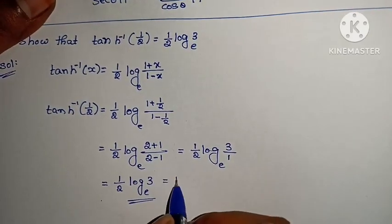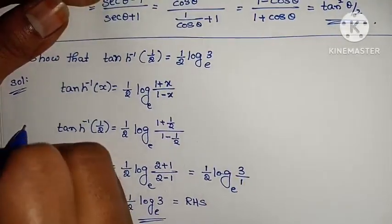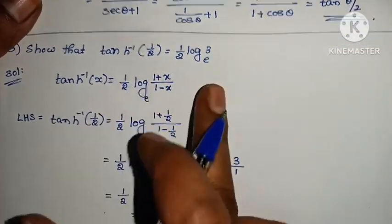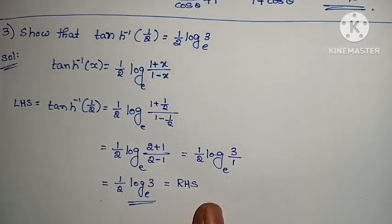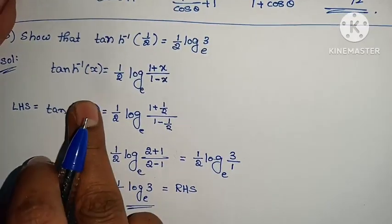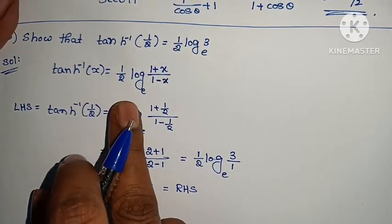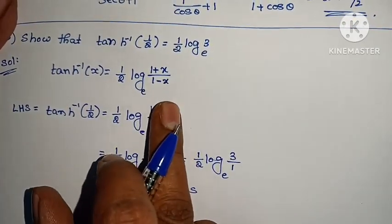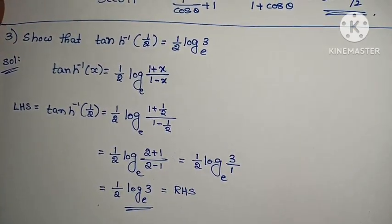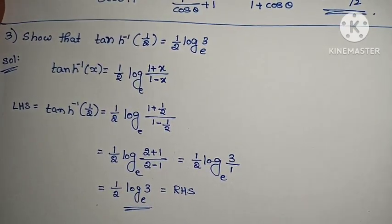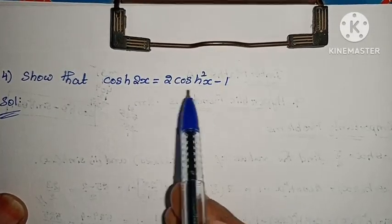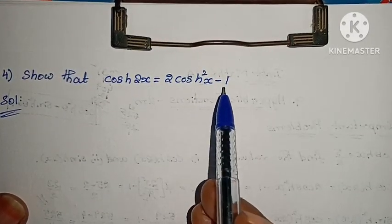LHS equals RHS. Here tanh⁻¹(x) = (1/2)log((1 + x)/(1 − x)), just value substitution gives the answer. The next question is: show that cosh(2x) = 2cosh²(x) − 1.